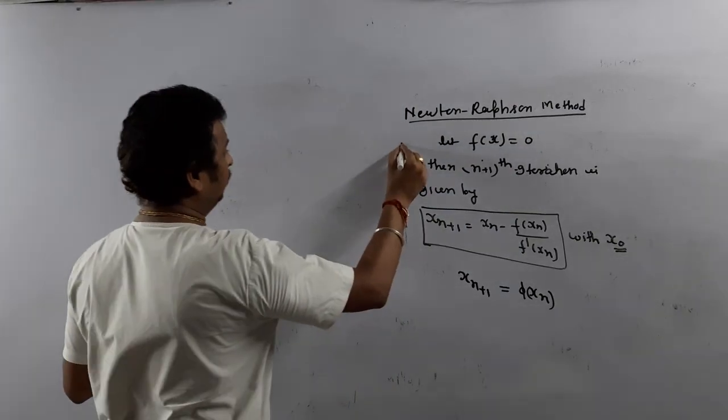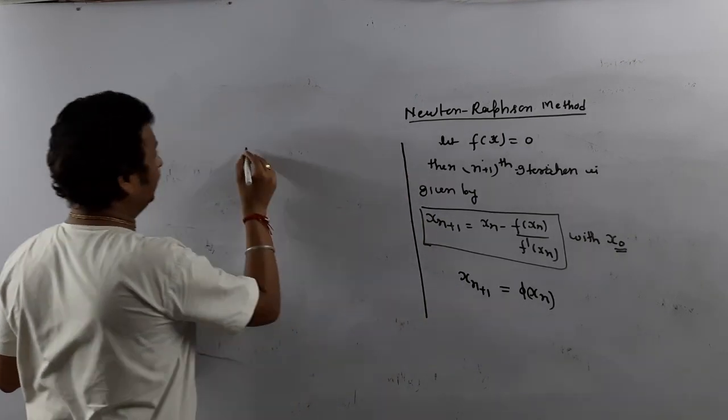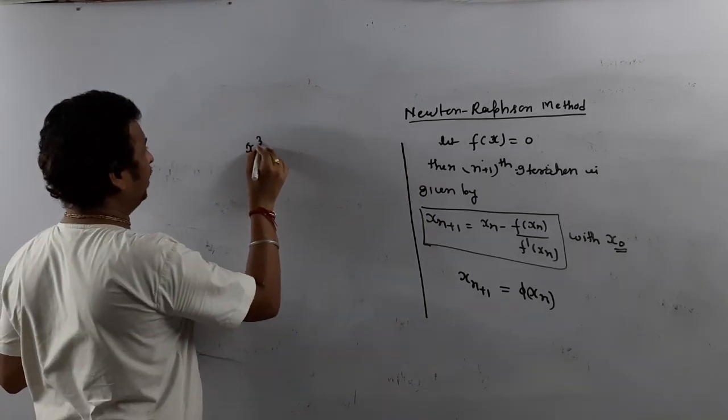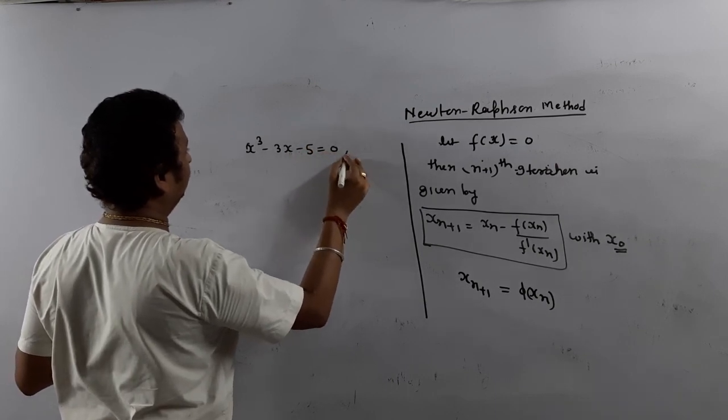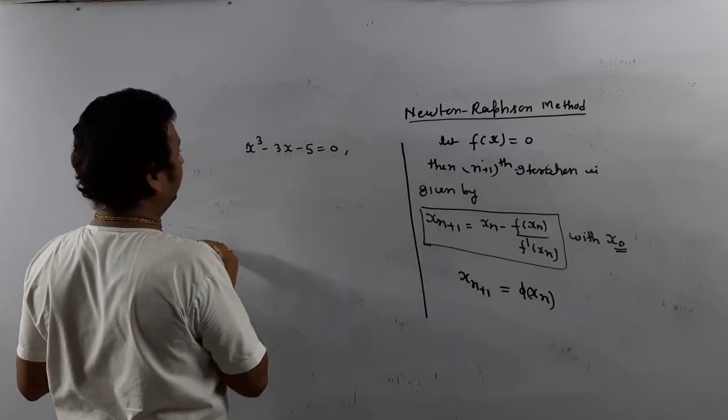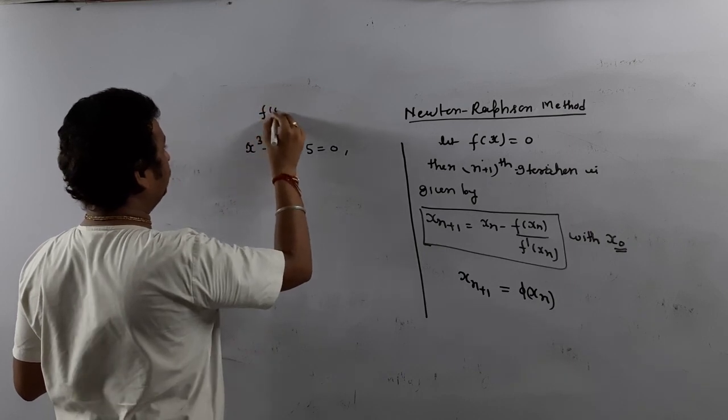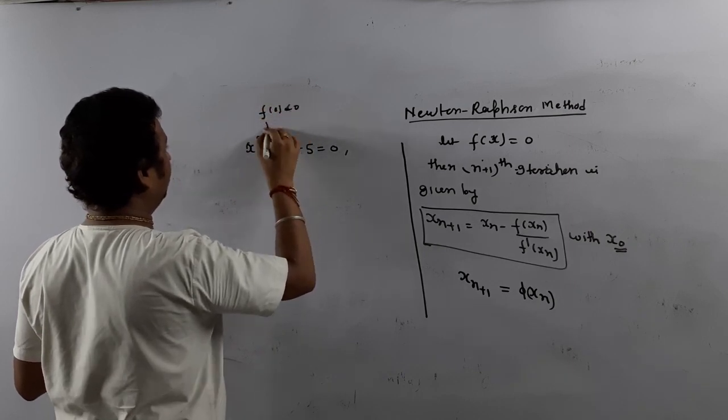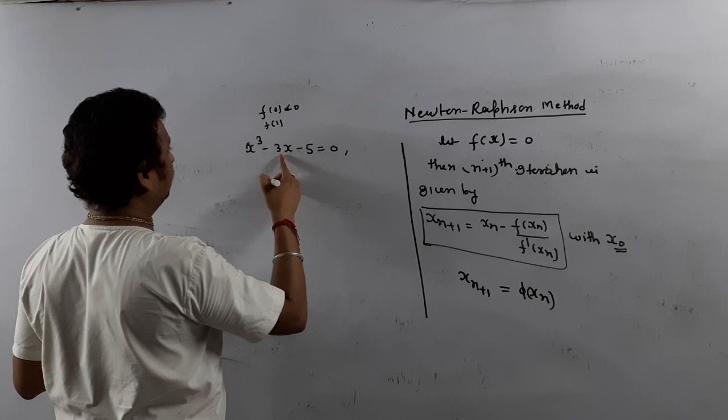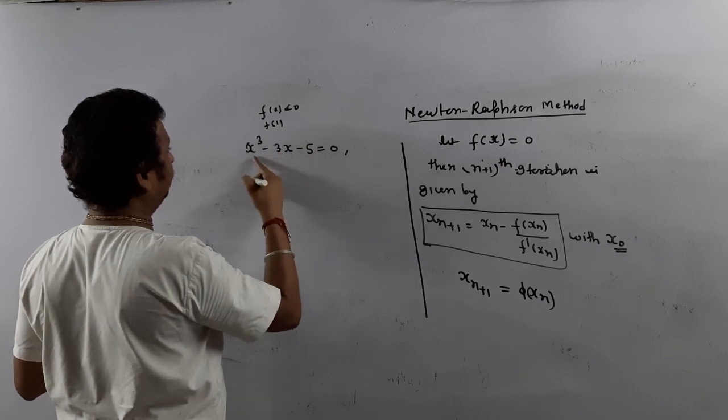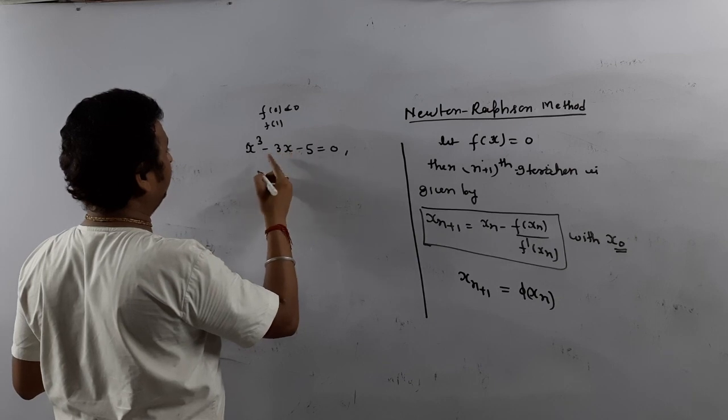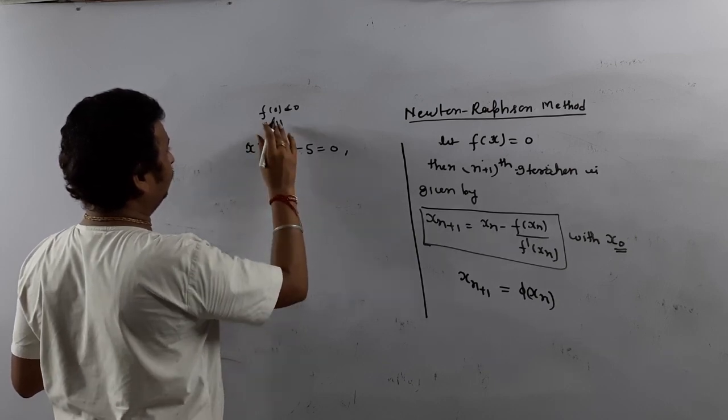I will take one question. Suppose we want to solve x³ minus 3x minus 5 equals zero and I have taken a starting root.